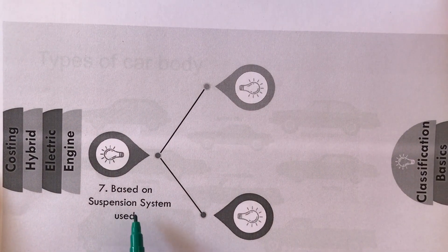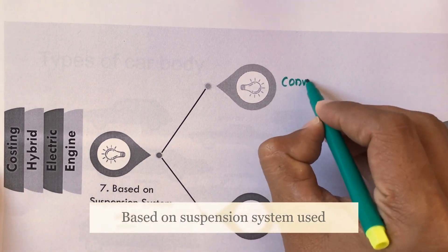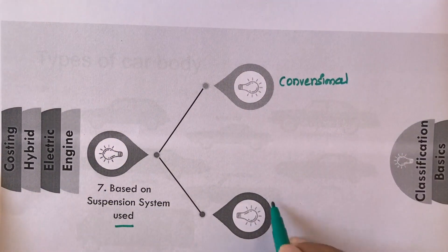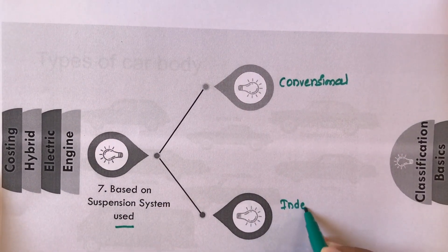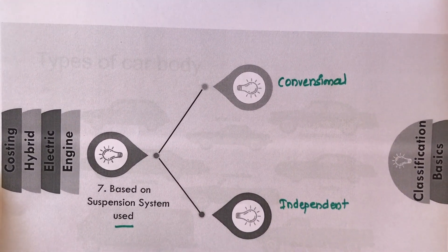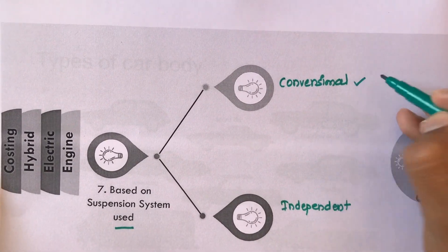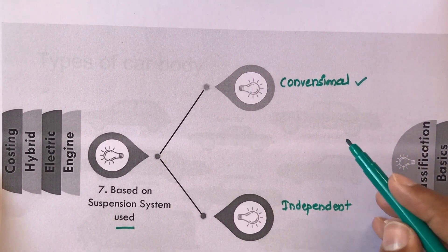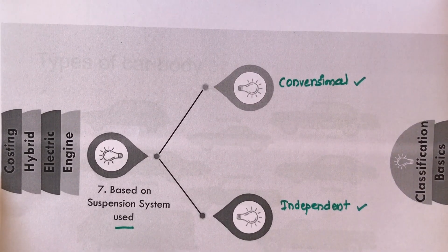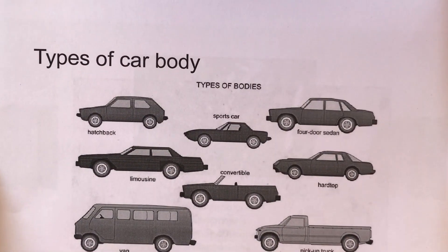The next basis of classification is based on the suspension system used. That may be a conventional suspension system or an independent suspension system. Depending on the suspension system, vehicles are classified as conventional suspension system vehicles or independent suspension system vehicles.